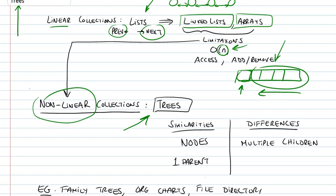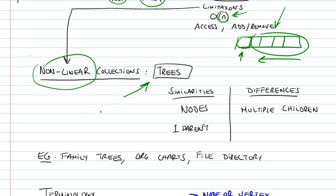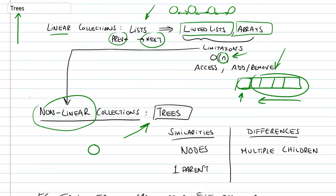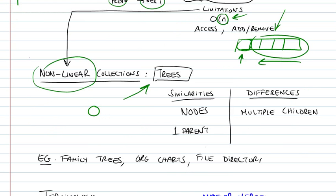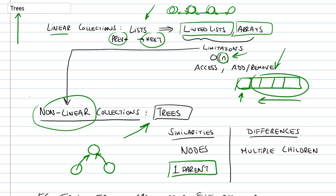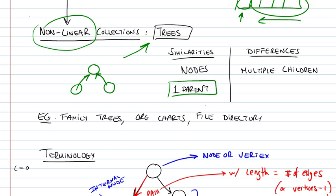A tree has a number of similarities and differences when compared to a list. The similarities are that trees are also composed of nodes or elements — just as in a list we had nodes, in a tree we also have nodes which contain an element. Also, each node has one parent. So nodes have a previous reference: in a list we called it 'previous', but here we refer to it as a 'parent'. Each node has a parent node preceding it, unless it is the root node.